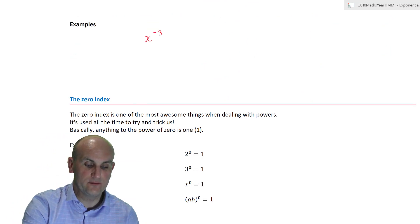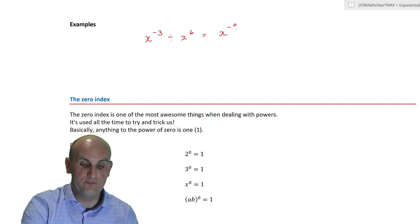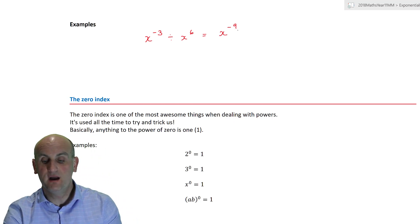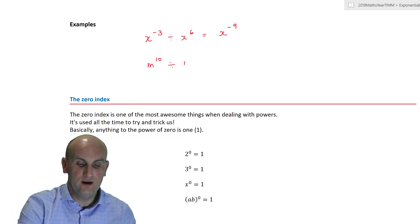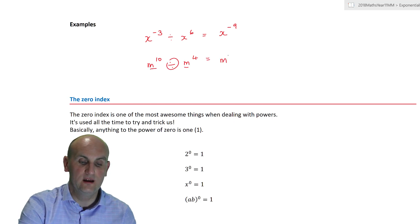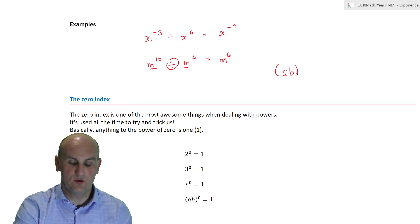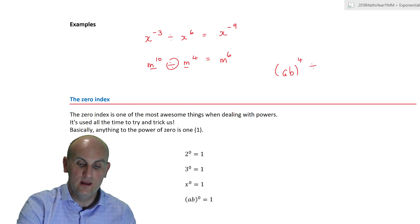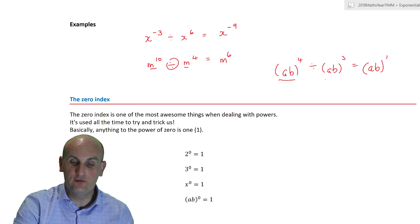More division examples: x to the minus three divided by x to the sixth — subtracting gives x to the power of minus nine, because minus three minus six equals minus nine. It doesn't have to be x's: m to the power of ten divided by m to the power of four gives m to the power of six. And for grouped letters: (ab) to the power of four divided by (ab) to the power of three gives (ab) to the power of one, because the brackets say treat this as one thing.